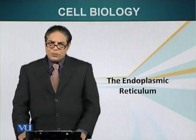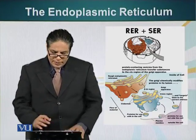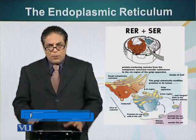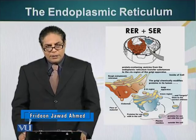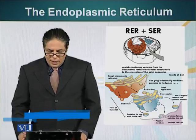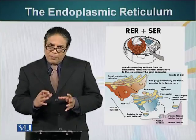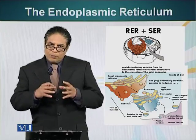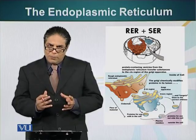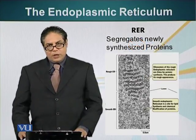In this module we will talk about endoplasmic reticulum. Endoplasmic reticulum is composed of two different components: RER, the rough endoplasmic reticulum, and SER, the smooth endoplasmic reticulum. Both these components of the cell play a very important function in sorting and modifying proteins. Let's talk about the rough endoplasmic reticulum first.